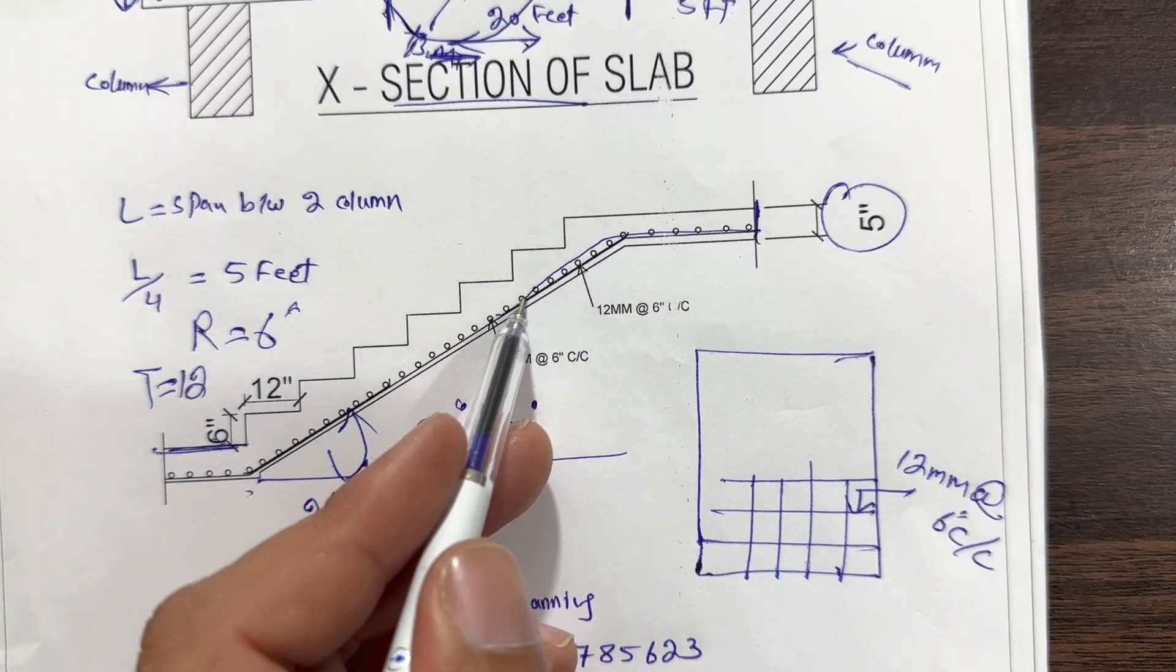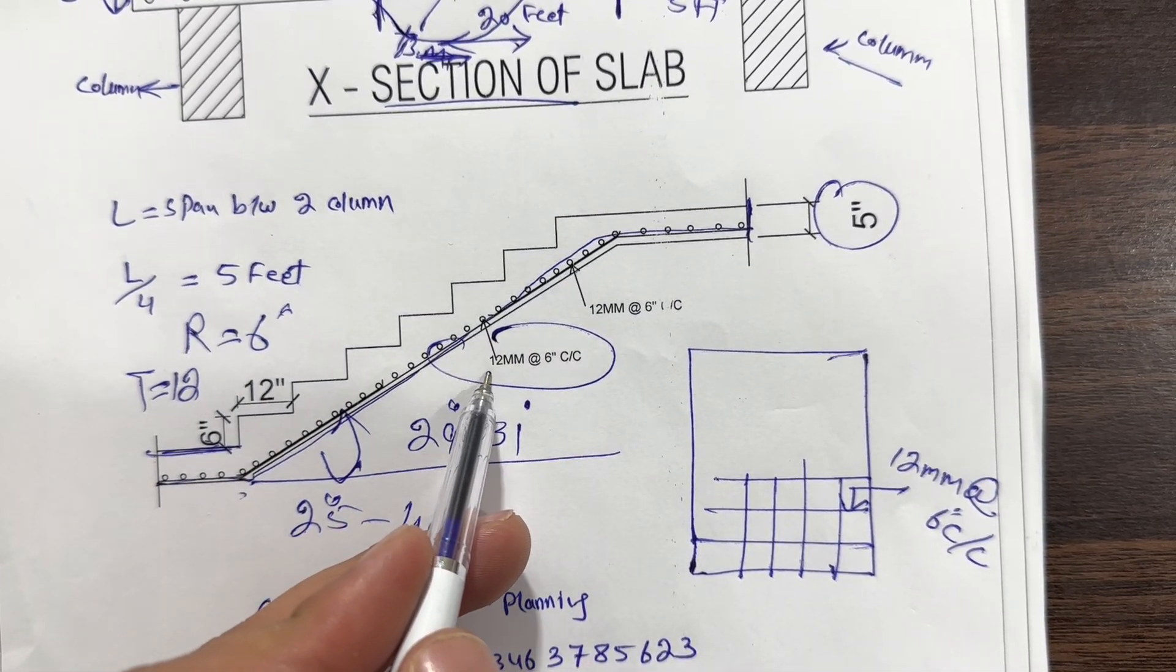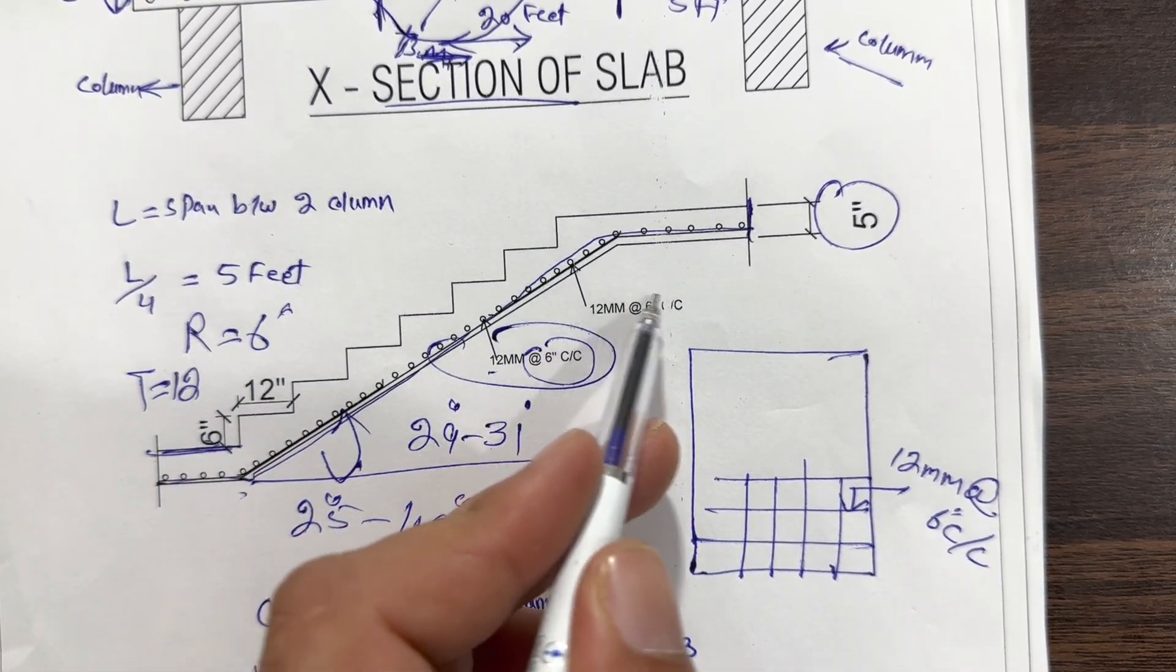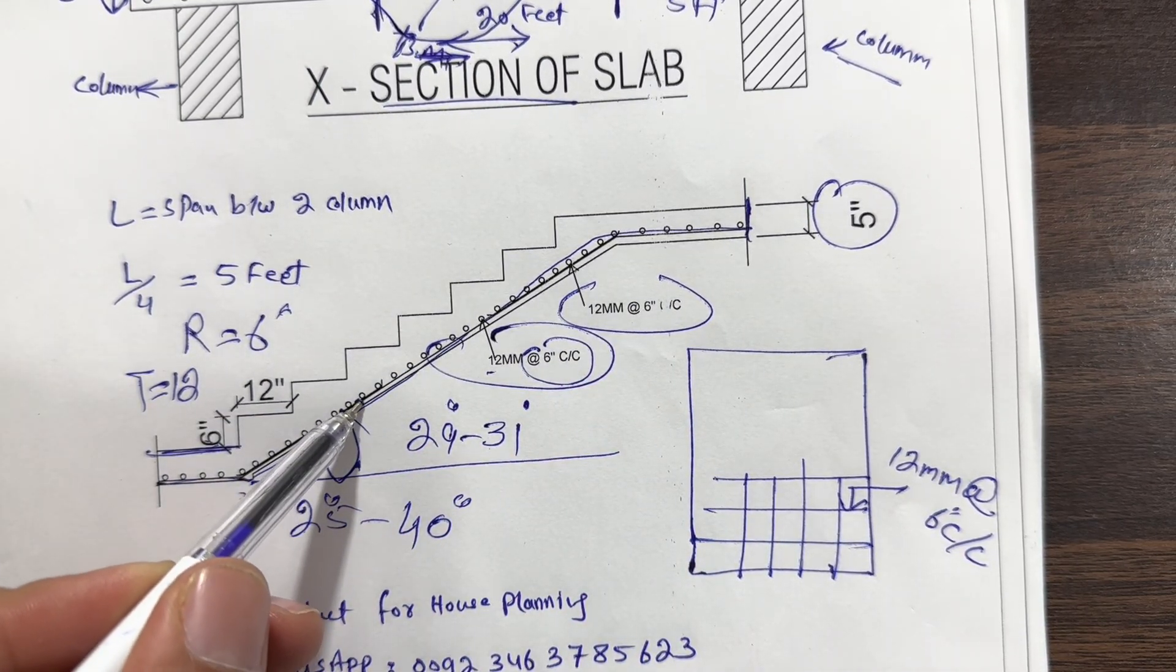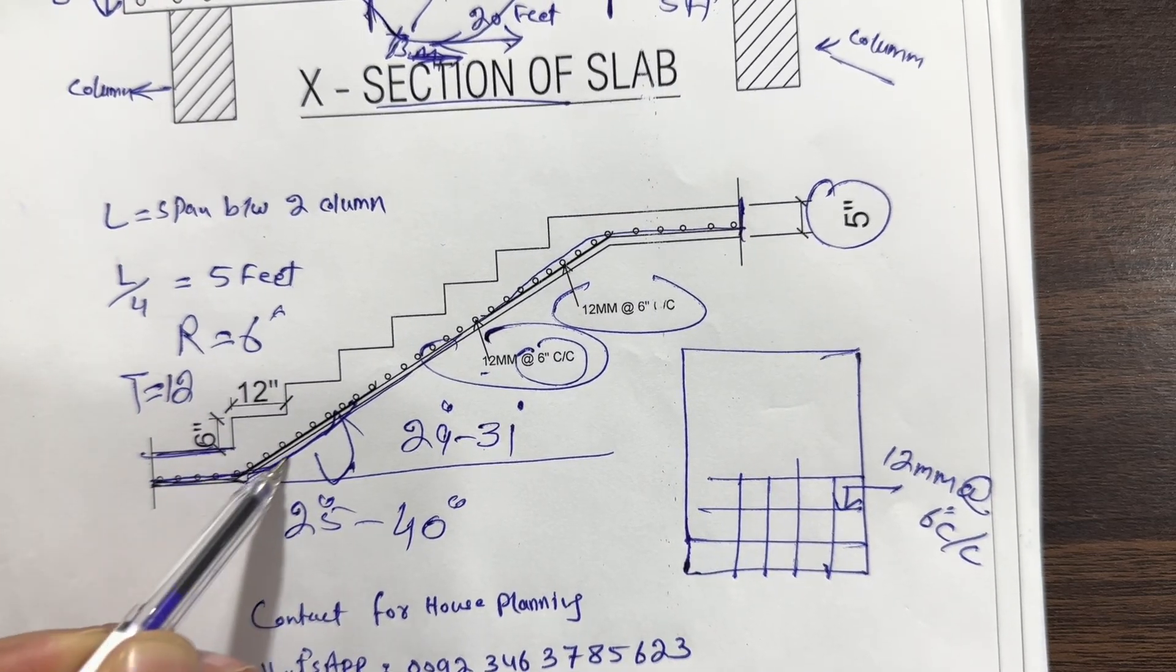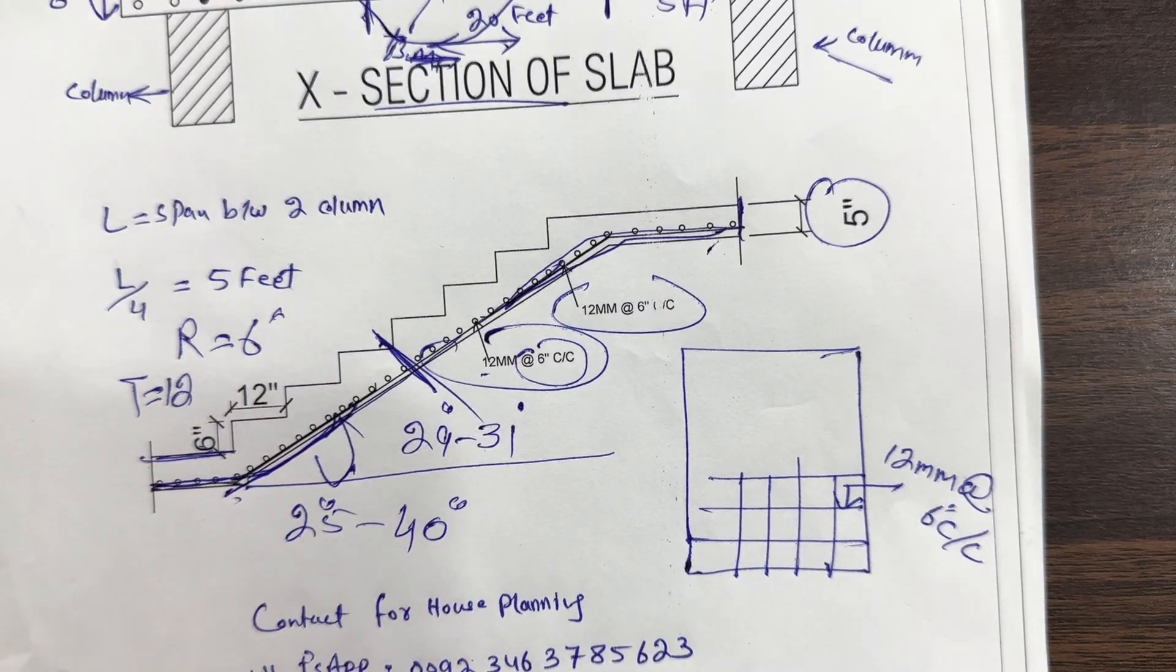You can see these are steel reinforcement. The main bars and distribution bars dia is here 12 millimeter with the spacing of 6 inches. This is also 12 millimeter with the spacing of 6 inches. Here also we have extra rods at this place. This middle we don't have the extra steel rod.